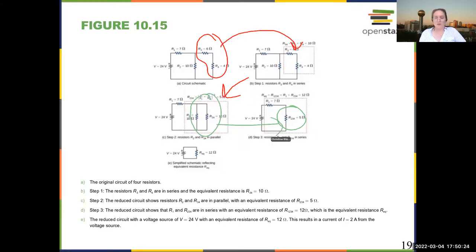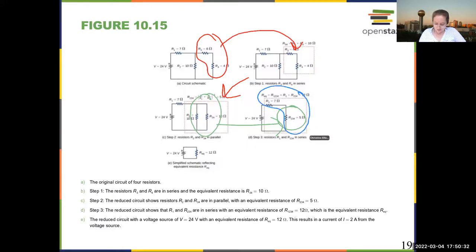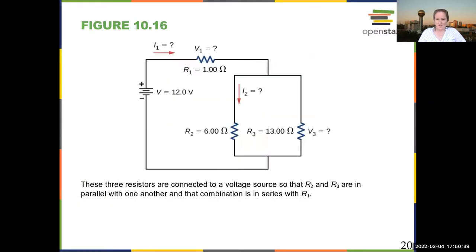In step D, we have a simple circuit that only has two resistors in series, so I can combine these two resistors and get that. That becomes a circuit that's much easier to analyze.